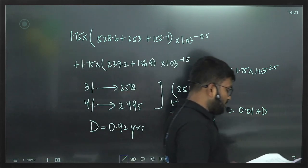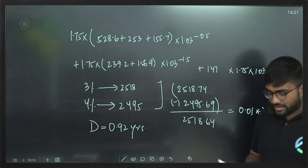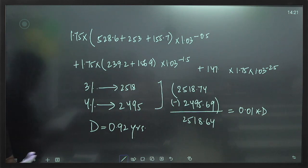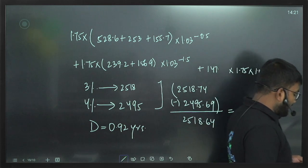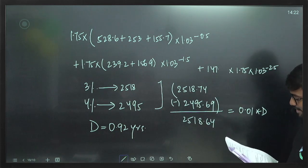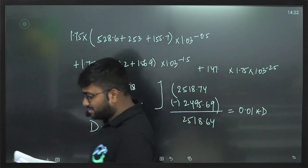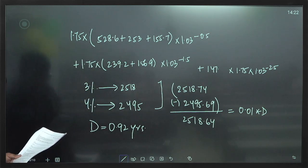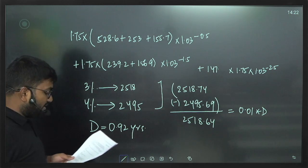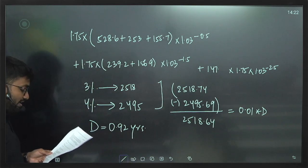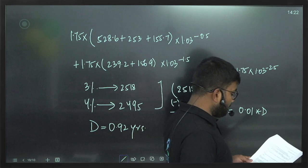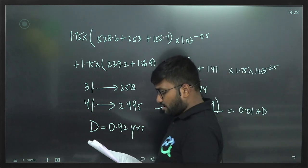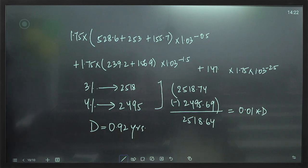Suggest criteria the insurer may use to determine an appropriate asset in which to invest the reserve. The asset should deliver at least the rate of return used to calculate the reserve. The asset should have an interest rate duration of around 0.92 years. The asset might also need to have inflation sensitivity to minimize exposure to inflation risk — ideally inflation-linked. The asset should have a minimal probability of default, should be in the same currency as the reserve and expected claims, and should be liquid enough to pay claims when needed.